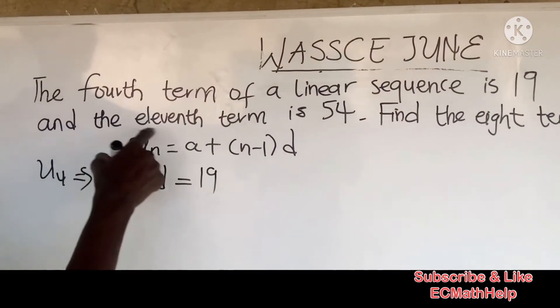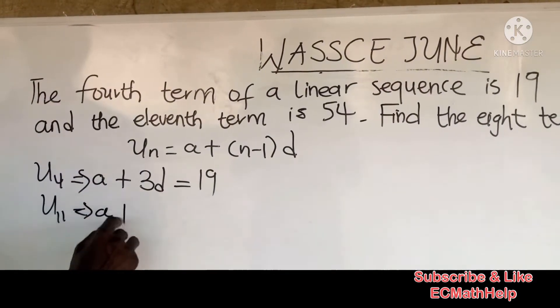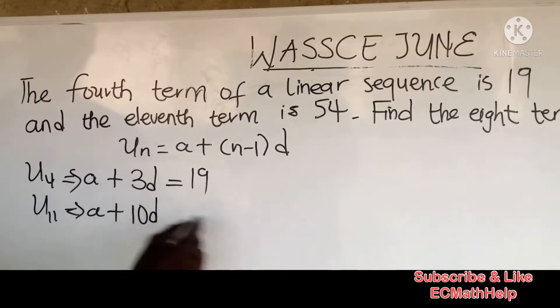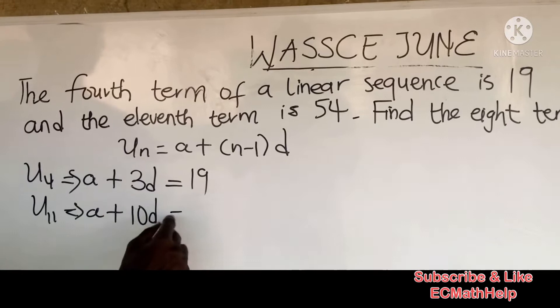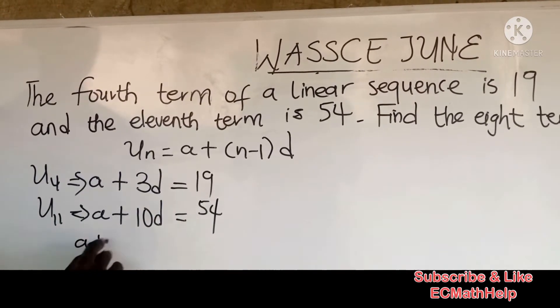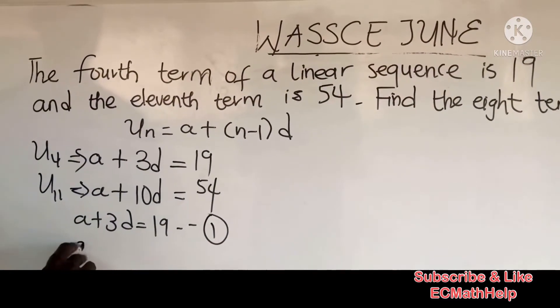The 11th term is 54, so U₁₁ = a + 10d = 54. We label a + 3d = 19 as equation 1, and a + 10d = 54 as equation 2.